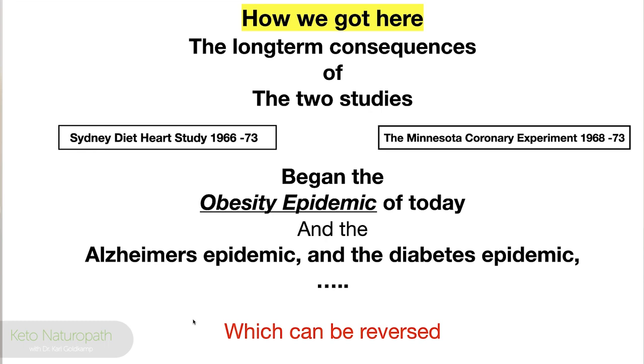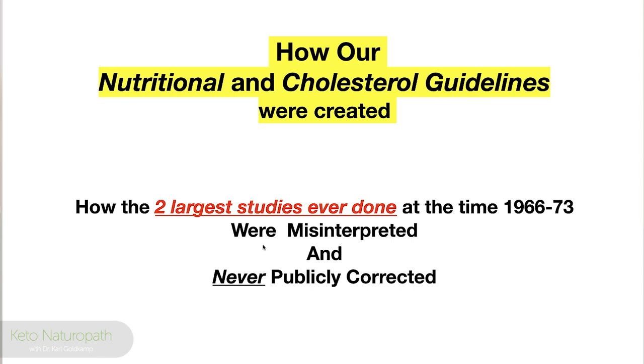How our nutritional and cholesterol guidelines were created: the two largest studies ever done at the time, from 1966 to 1973, were misinterpreted and never publicly corrected. My analogy is: you've been wrongfully convicted of murder and you're on death row, and while you're on death row the original witnesses recant their testimony — there is now no evidence against you — and yet the verdict does not change. What fair world does that exist in?